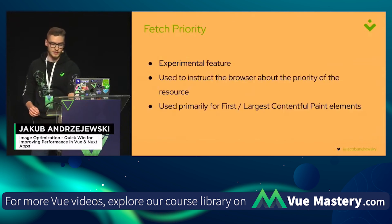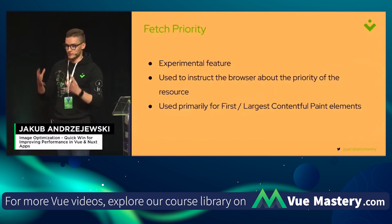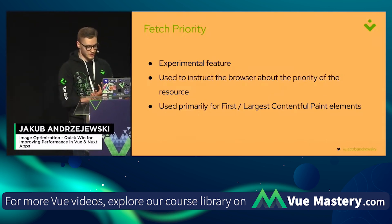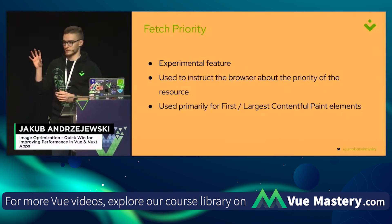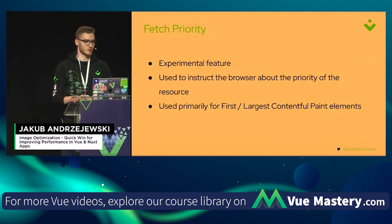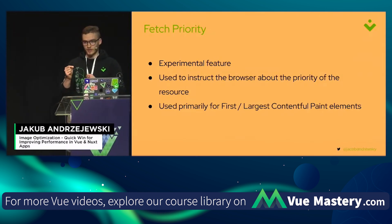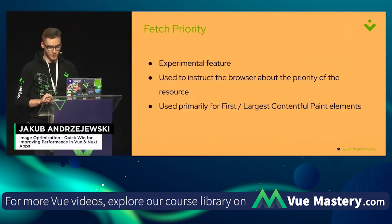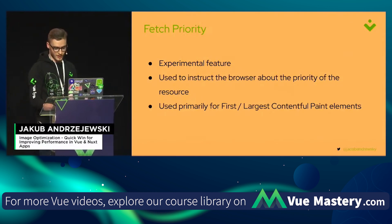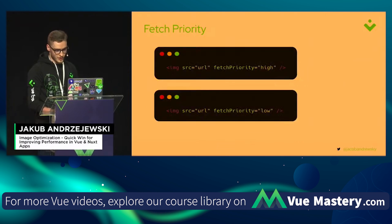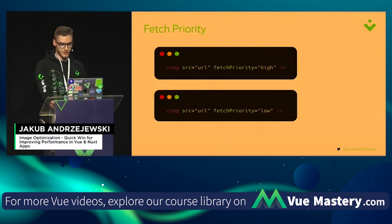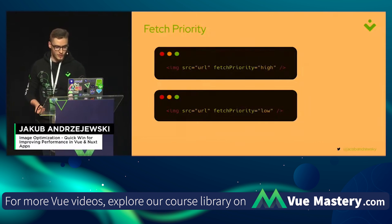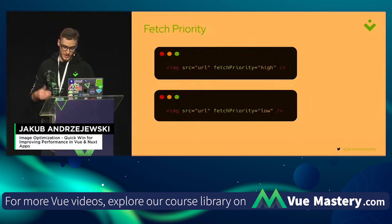There is also fetch priority, which is an experimental feature that allows you to instruct the browser when it should fetch a request. You can use it to tell the browser that a certain resource is super needed and should be loaded as soon as possible. For example, for the home banner of your homepage, you should use fetch priority high. You can also instruct the browser to fetch certain images later on.